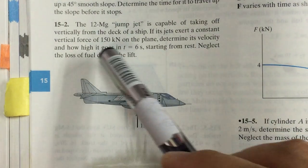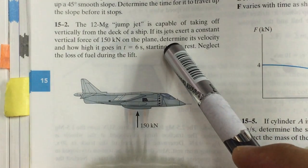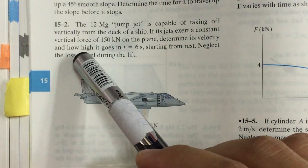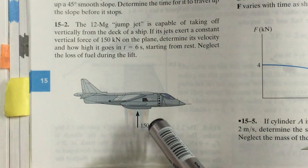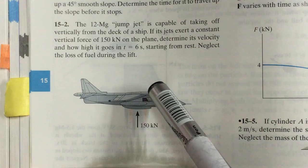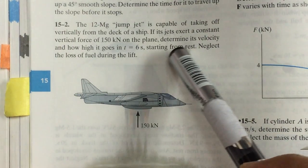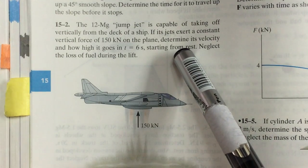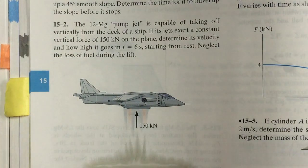If its jet exerts a constant vertical force of 150 kilonewton on the plane, determine its velocity and how high it goes in t equals to 6 seconds. So we measure the S values and also the velocity values starting from rest, which means that the initial velocity is going to be equal to zero. So neglect the loss of fuel during the flight. So we are not worried about the changes of mass.